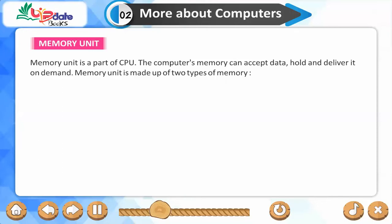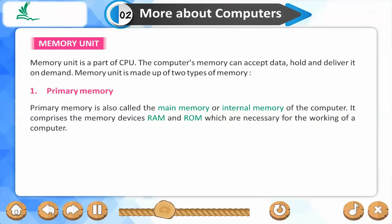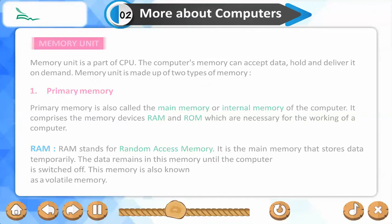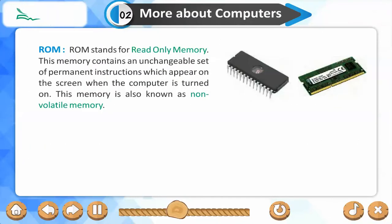Memory unit is a part of the CPU. The computer's memory can accept data, hold it, and deliver it on demand. It is made up of two types: primary memory and secondary memory. Primary memory, also called main or internal memory, comprises RAM (Random Access Memory) and ROM. RAM stores data temporarily — the data remains until the computer is switched off, making it volatile memory. ROM contains an unchangeable set of permanent instructions and is non-volatile memory.